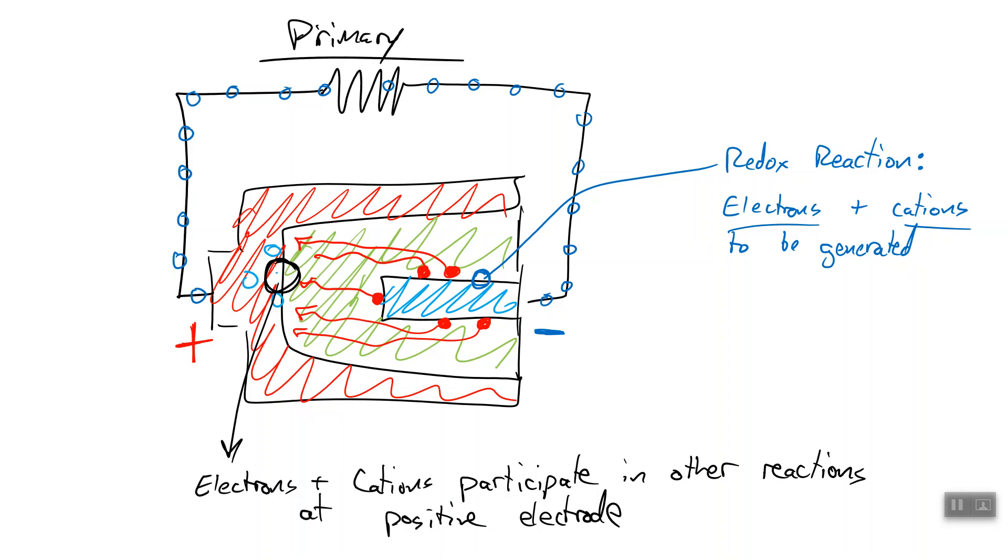The electrons plus the cations participate in what we will just call other reactions, and this happens at the positive electrode. Now this, remember, was a primary cell. It's a primary cell because you see how we are fundamentally changing the chemistry of the battery. These redox reactions are happening, separating electrons and cations, which then migrate away. We now have something new here and something new here. And even if we power it the opposite way, if we get rid of this resistor and instead create a voltage supply which we put across this thing, we won't be able to make the reaction go in reverse.